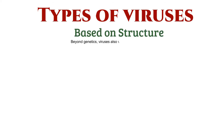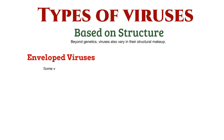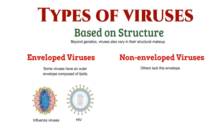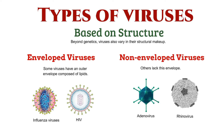Beyond genetics, viruses also vary in their structural makeup. Some viruses sport an outer envelope composed of lipids, like influenza virus and HIV. Meanwhile, others lack this envelope, such as adenovirus and rhinovirus.